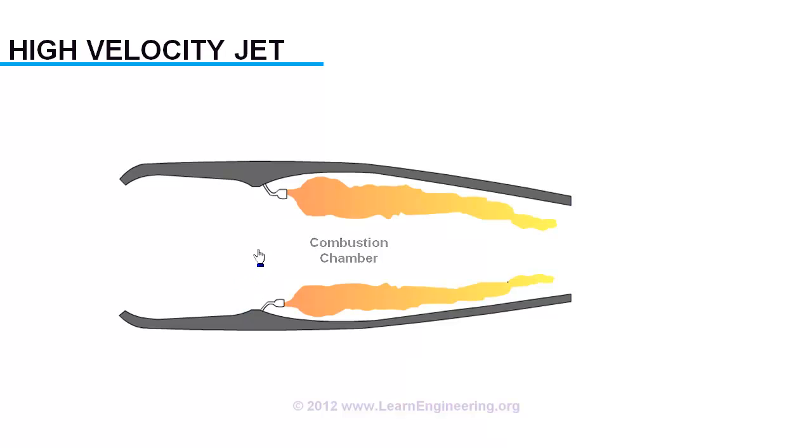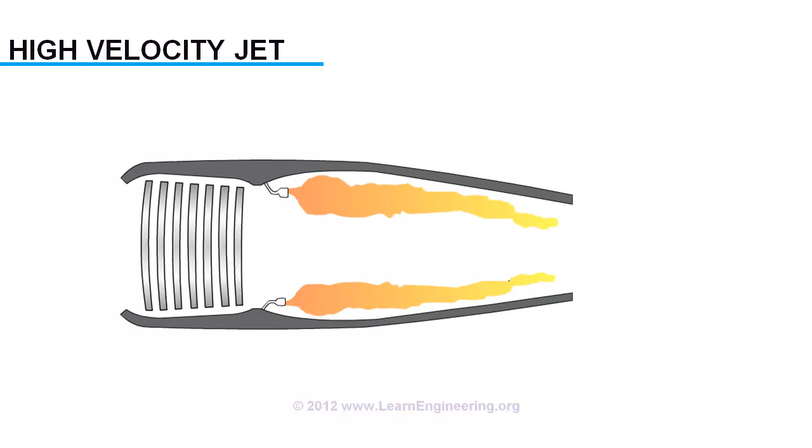This is achieved with help of a diffuser plus compressor arrangement. Air gets into the engine by forward motion of the engine and sucking effect of the compressor. The diffuser increases pressure of this fluid to some extent by converting some part of kinetic energy to pressure energy.